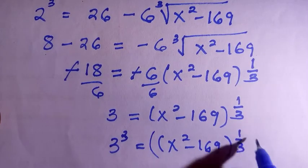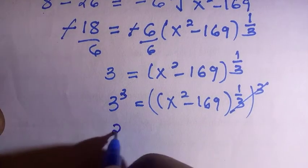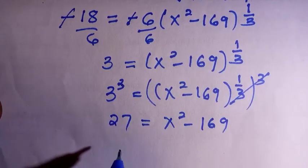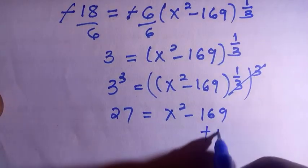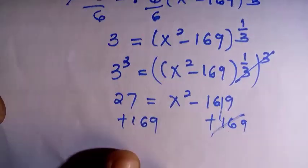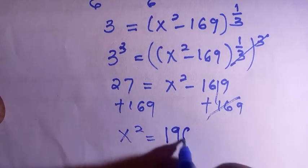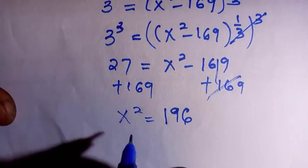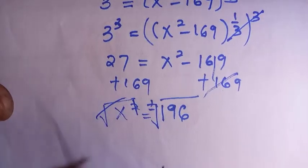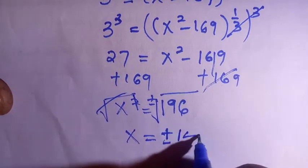Taking the cube of both sides: the right side simplifies to x² minus 169, and 3³ equals 27. Adding 169 to both sides: 27 plus 169 equals 196. Then taking the square root of both sides introduces plus or minus, giving x equals plus or minus 14.